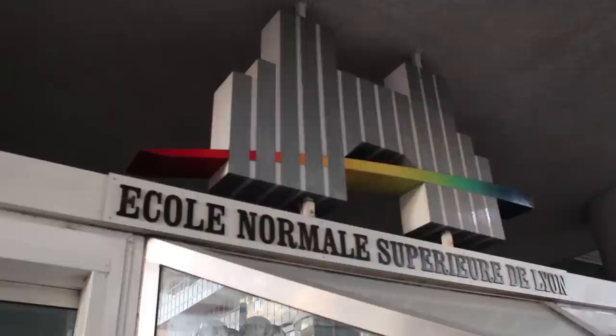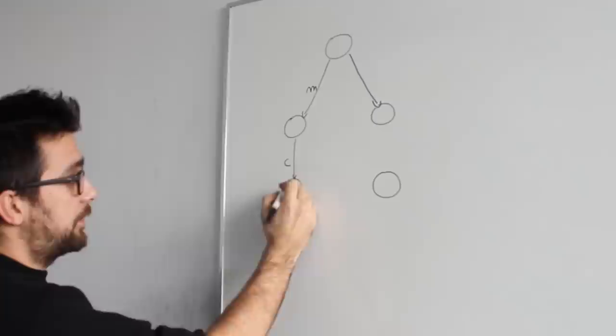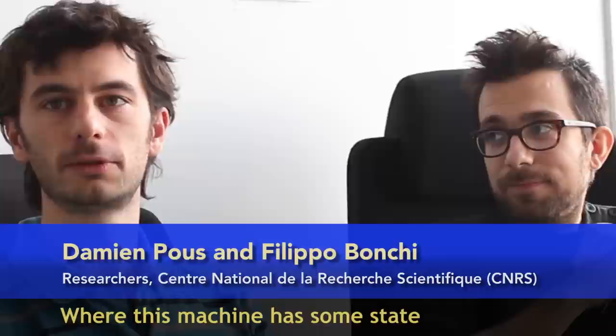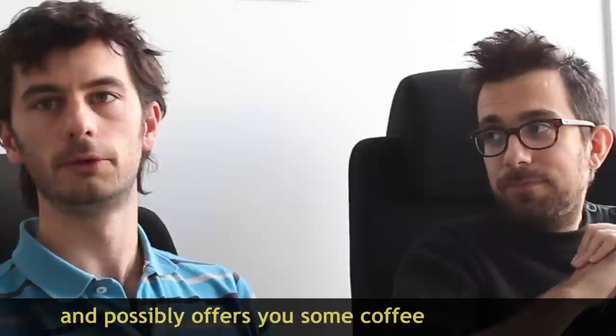At the École Normale Supérieure de Lyon, Philippe Bonchi and Damien Pous focus on the theoretical machines that drive the technological world. They specifically look at how such machines move from one state to the next until they reach their final or accepting states. Such machines are called finite automata. The simplest real-world example is that of a coffee machine—a vending machine where this machine has some states and you press a button and the machine evolves to a new state and possibly offers you some coffee.